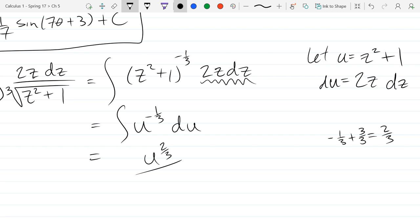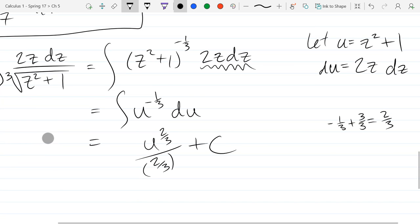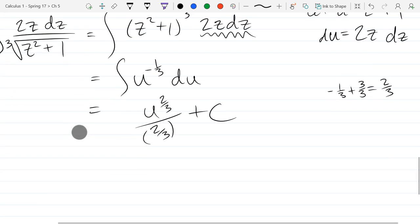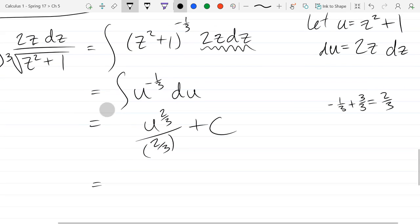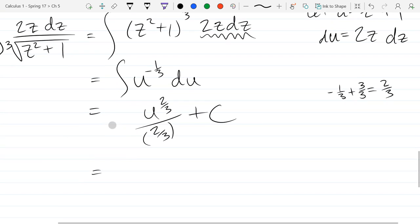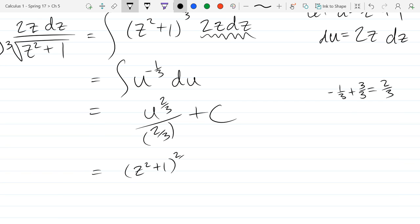Alright, u to the two-thirds divide by that power. Don't forget your plus constant. So all we did, add one to the power, divide by the new power. And u is z squared plus one. I could multiply by the reciprocal, no reason to have fractions of fractions.